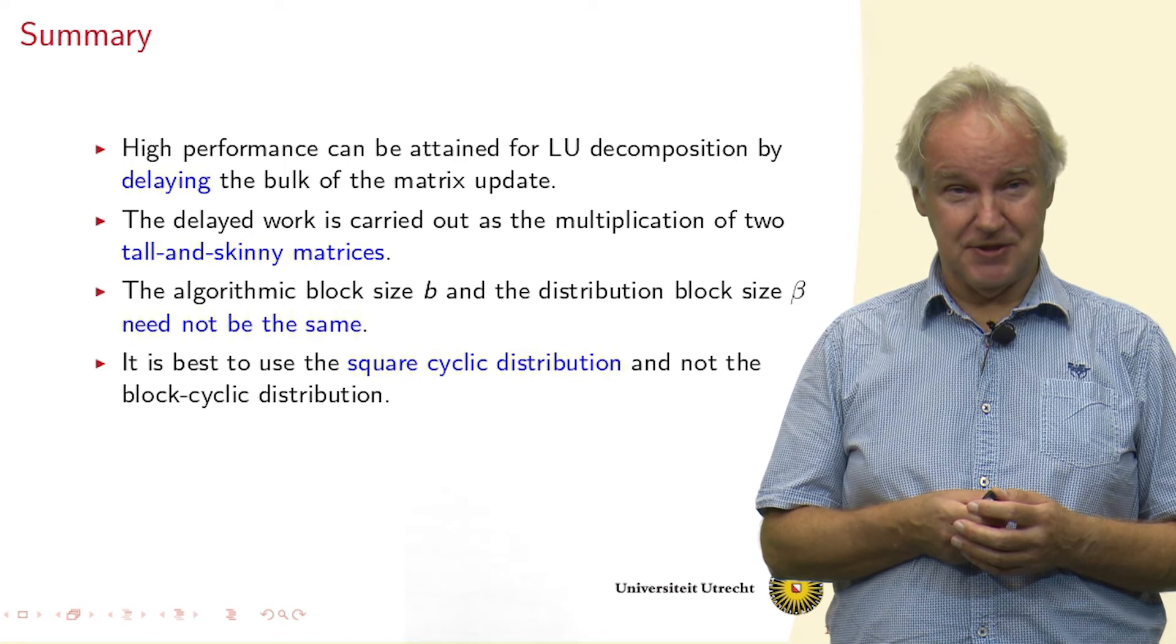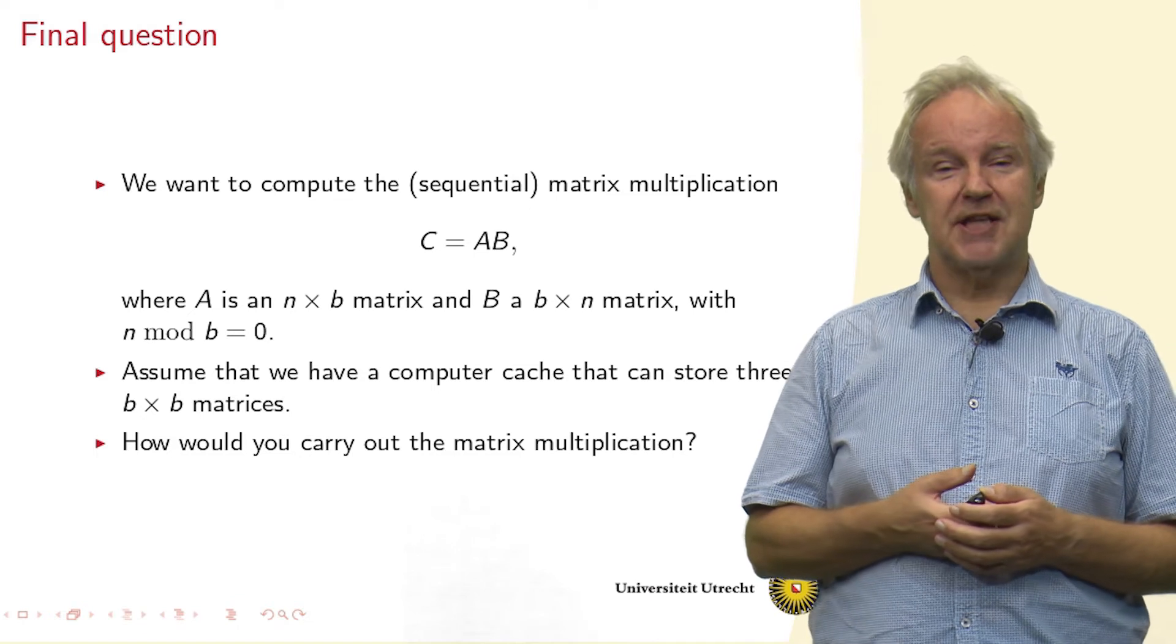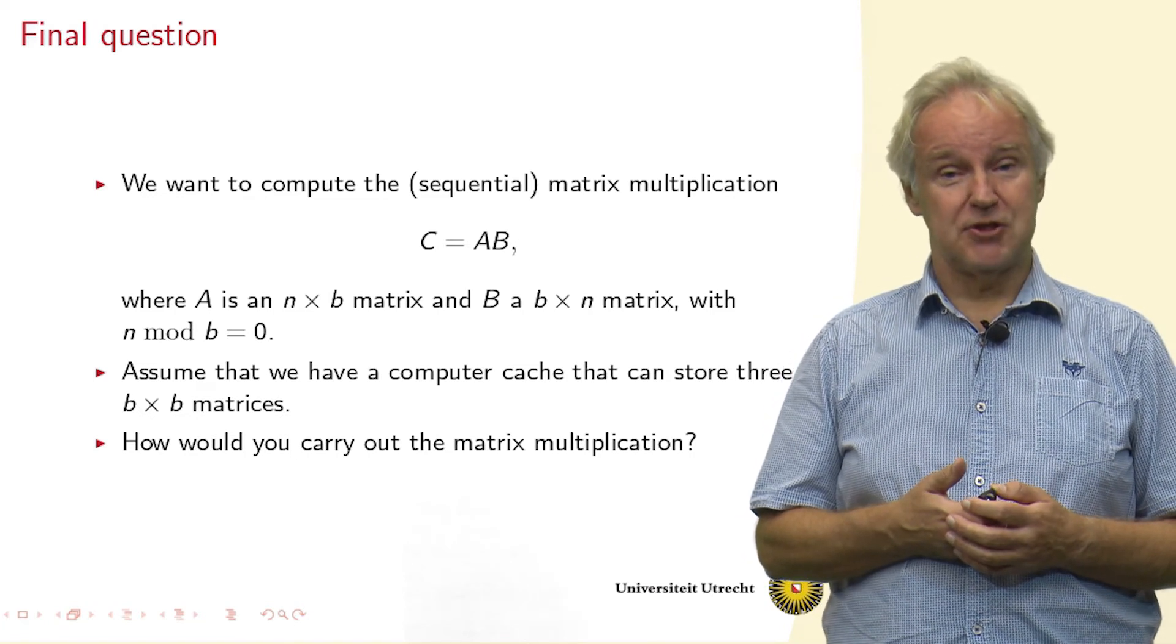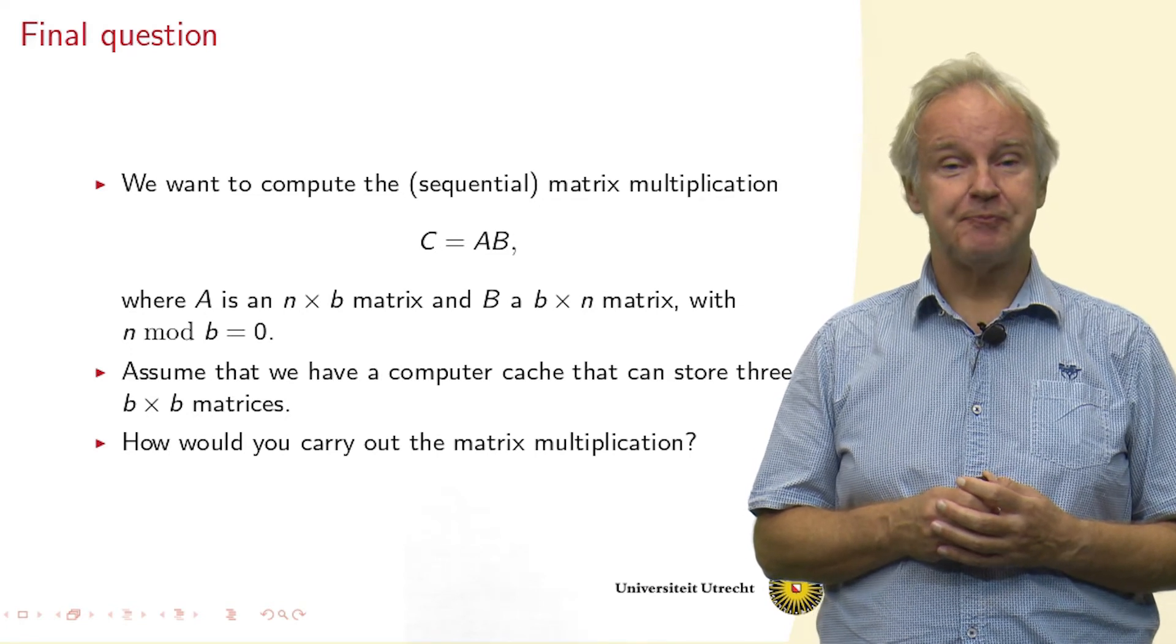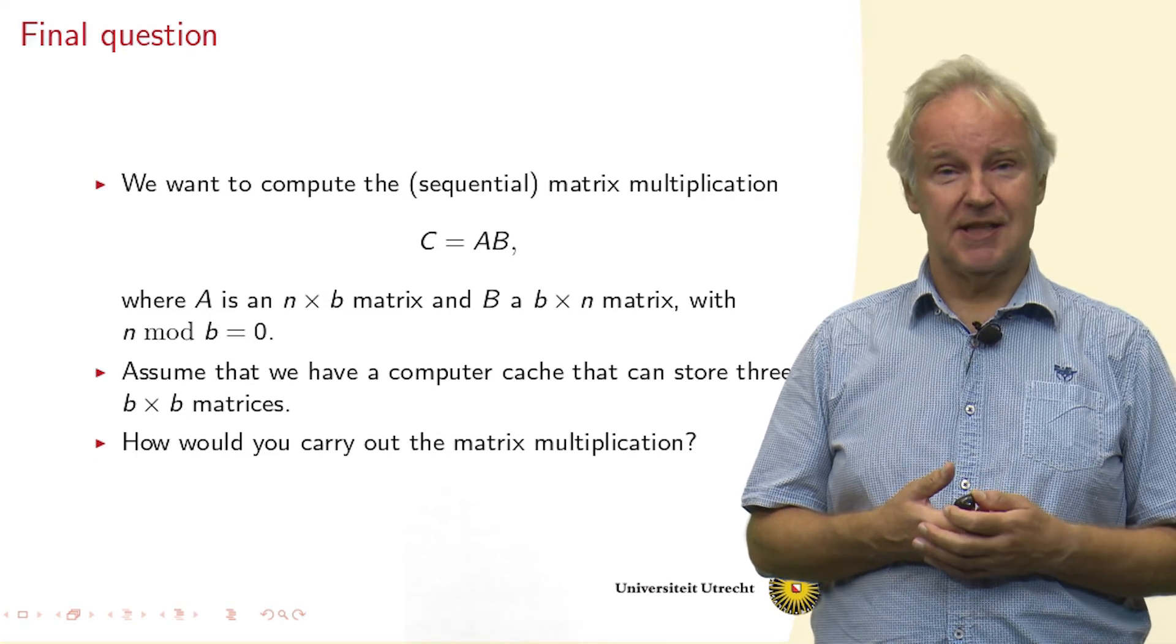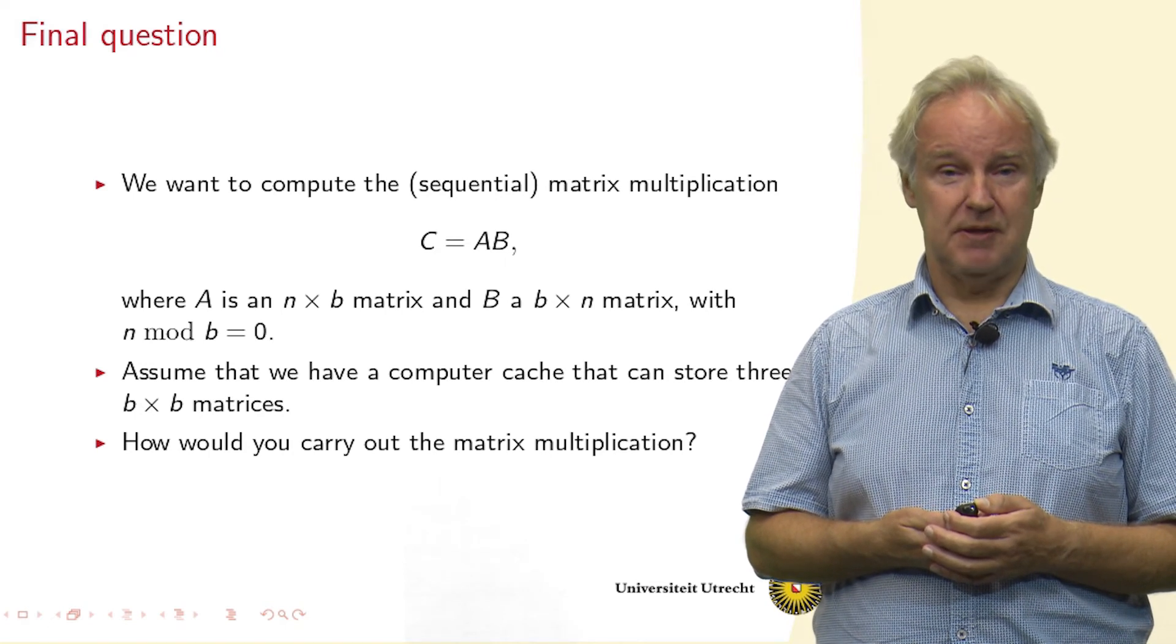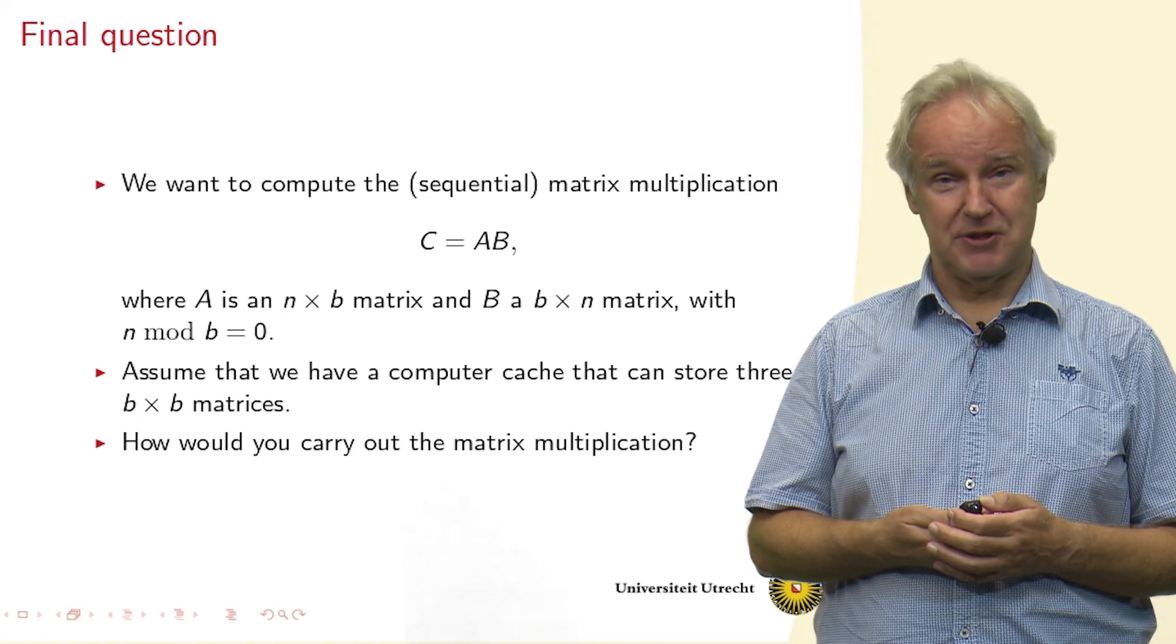Now a final question to you. Assume that we want to multiply a tall and skinny matrix A of size n times b and a matrix B of size b times n, where the sizes are lowercase b. And assume that you have a computer cache which can contain three matrices of size b times b. How would you, for this computer, carry out the matrix multiplication?